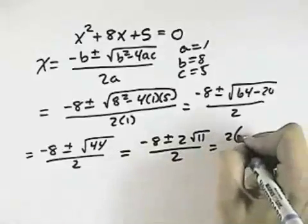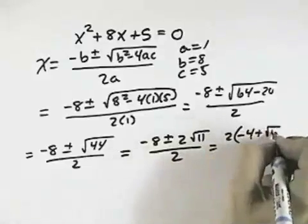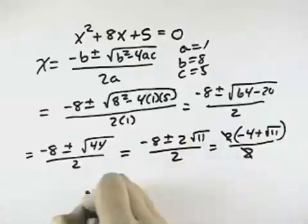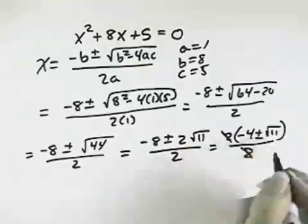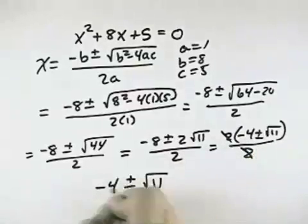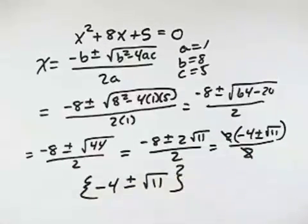If I factor 2 out of the numerator, I get negative 4 plus the square root of 11 all over 2, which allows me to cancel the 2 in the denominator, leaving me with negative 4 plus or minus the square root of 11 as my two solutions.